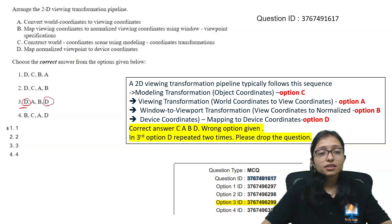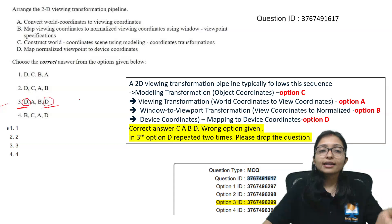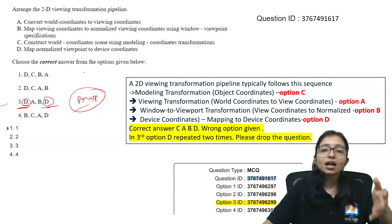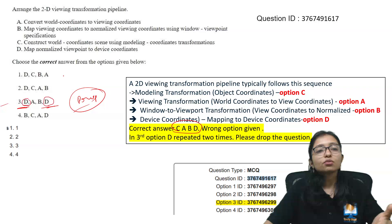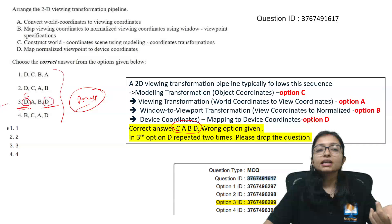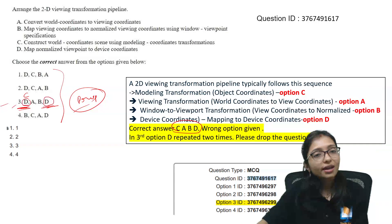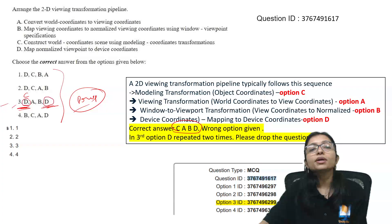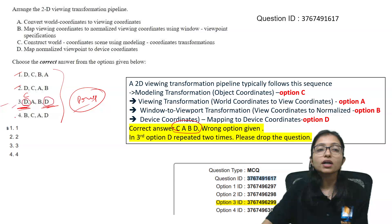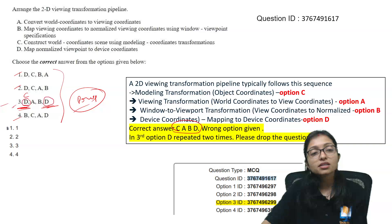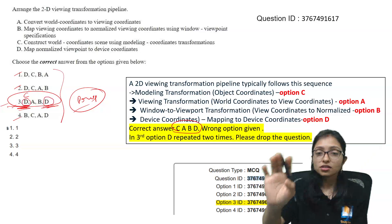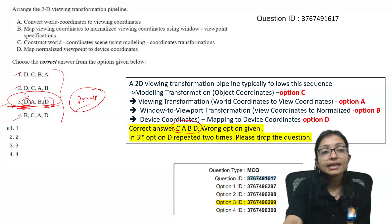This question has a typing mistake in option 3. The correct answer should be C, A, B, D, which is not given anywhere — instead of D it should be C, but it's not given. So technically this question should be dropped. Those who did not mark the given answer can challenge. Drop means everyone will get marks. Those who already marked the given option already have their marks and will not get extra marks.